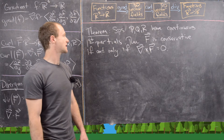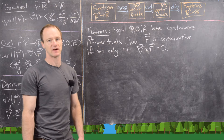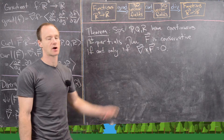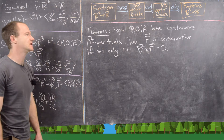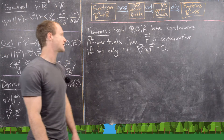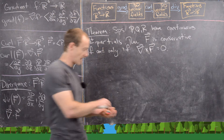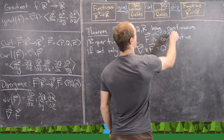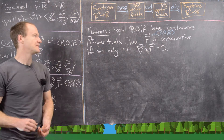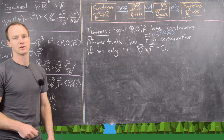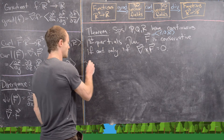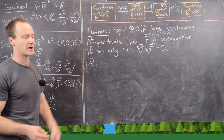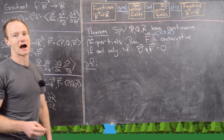The first result we'll look at is about the classification of conservative vector fields. If P, Q, and R have continuous first partial derivatives, then the vector field F with component functions P, Q, and R is conservative if and only if the curl of F equals zero. Let's look at the proof of one direction; I'll point towards a hint for the other direction.